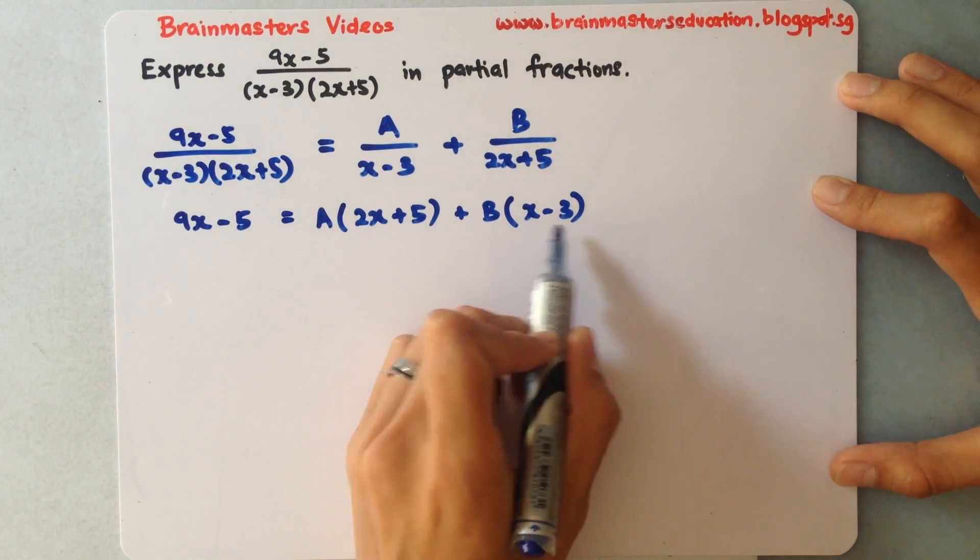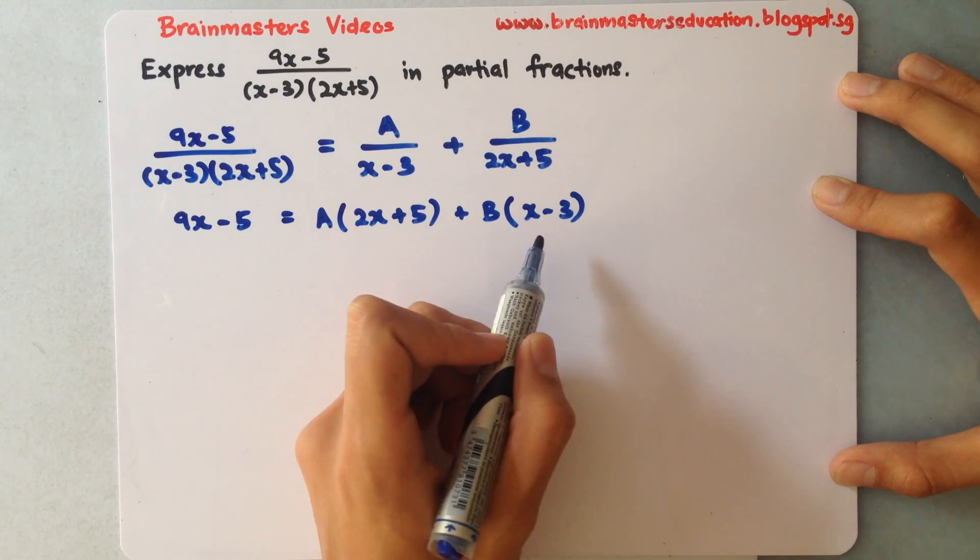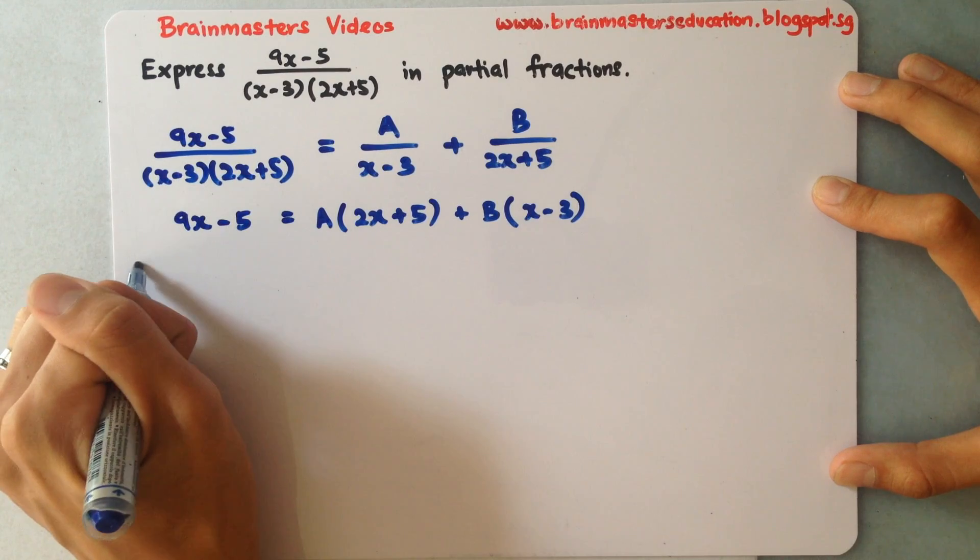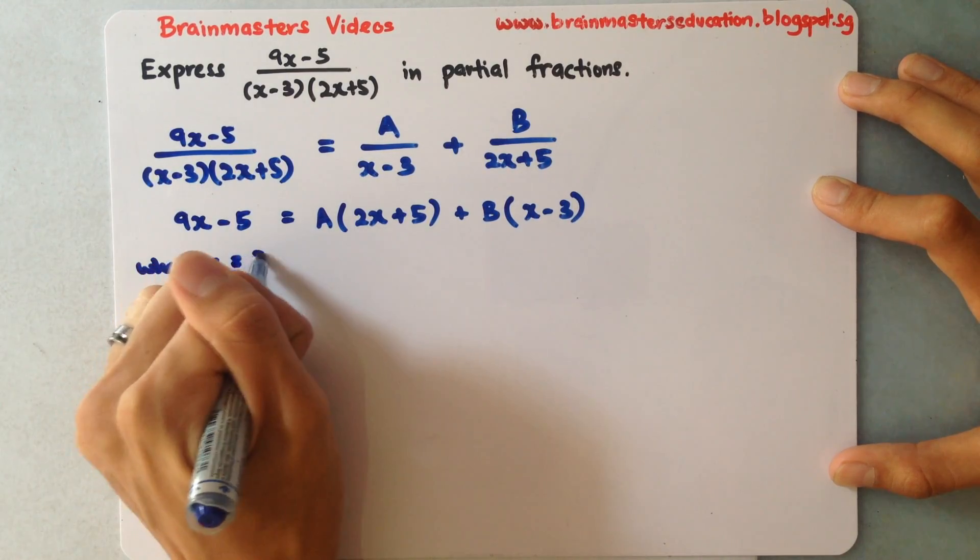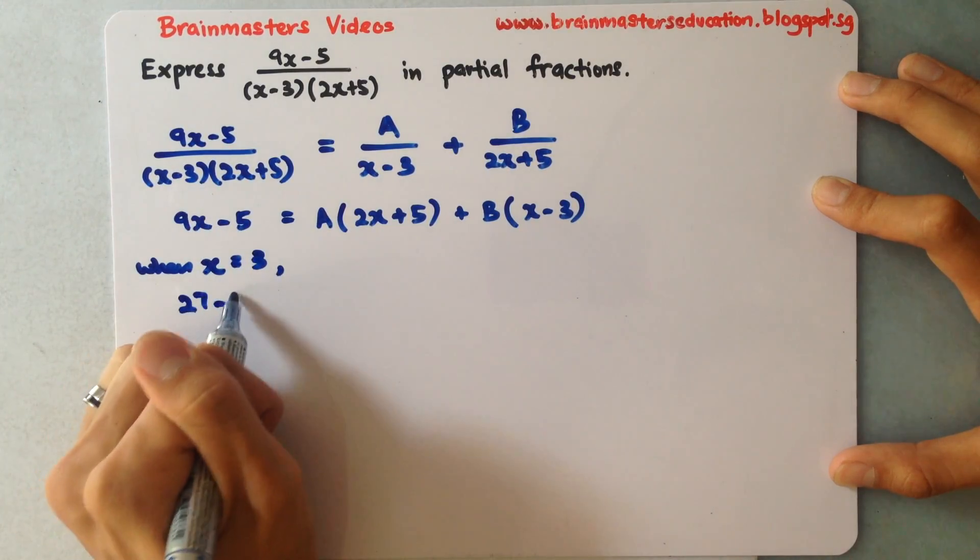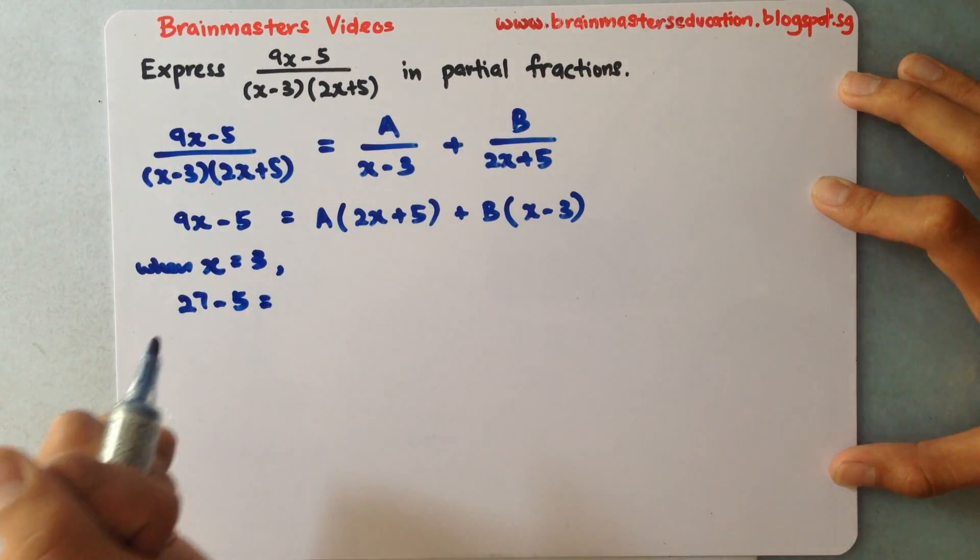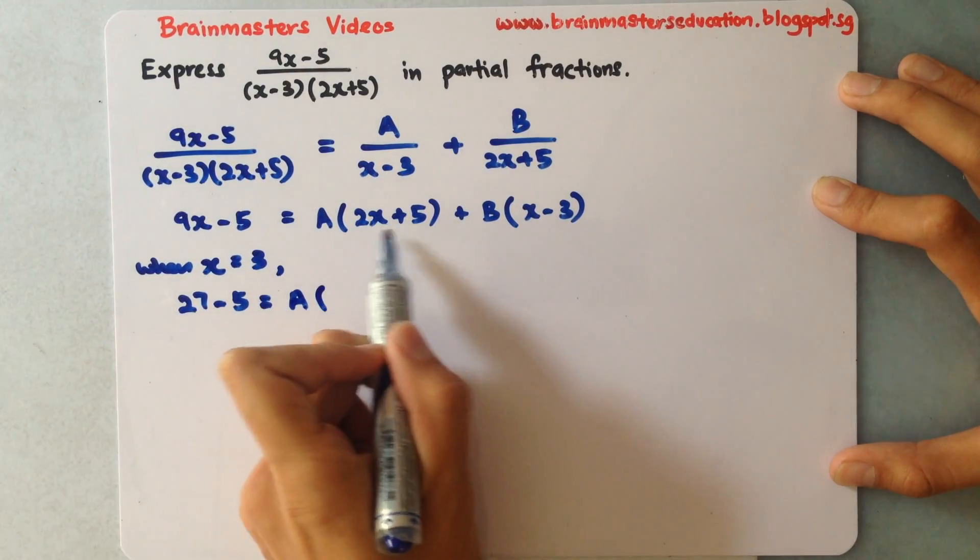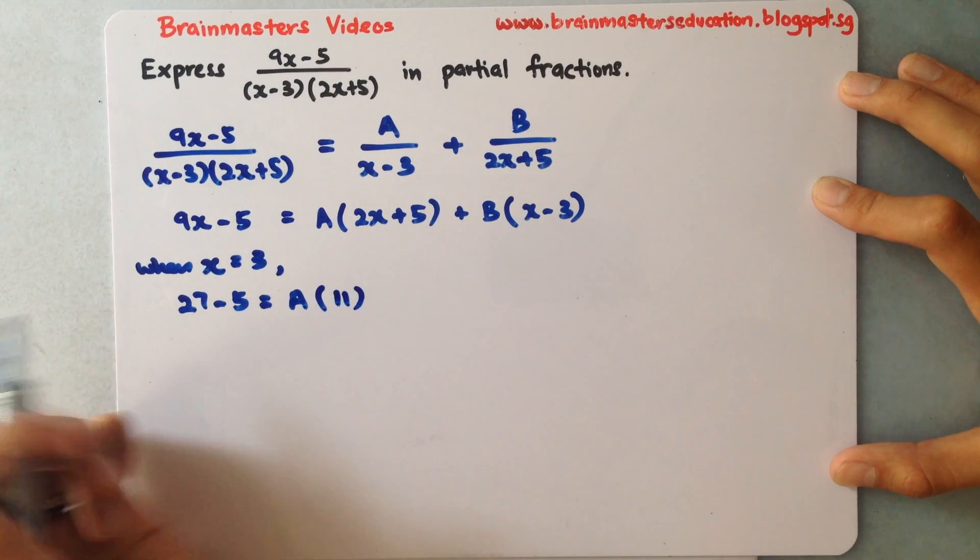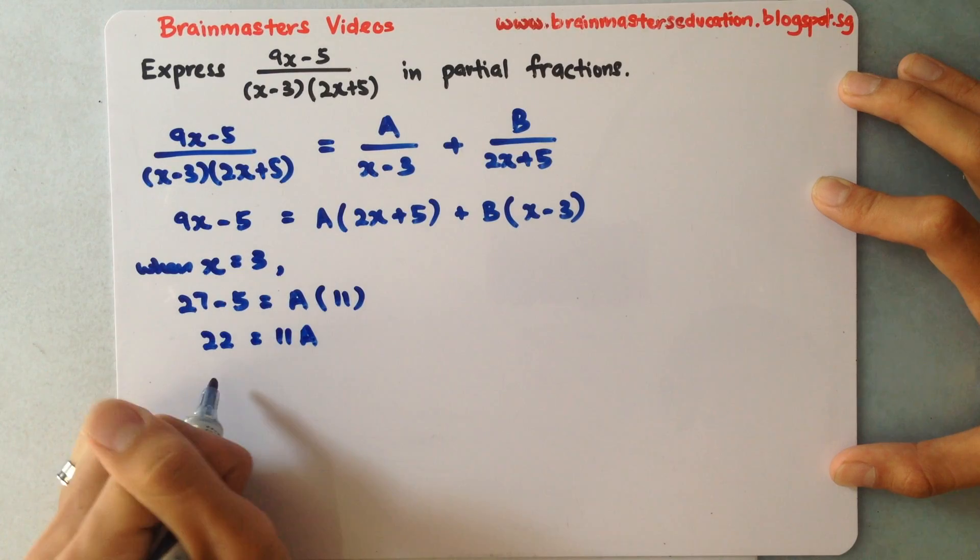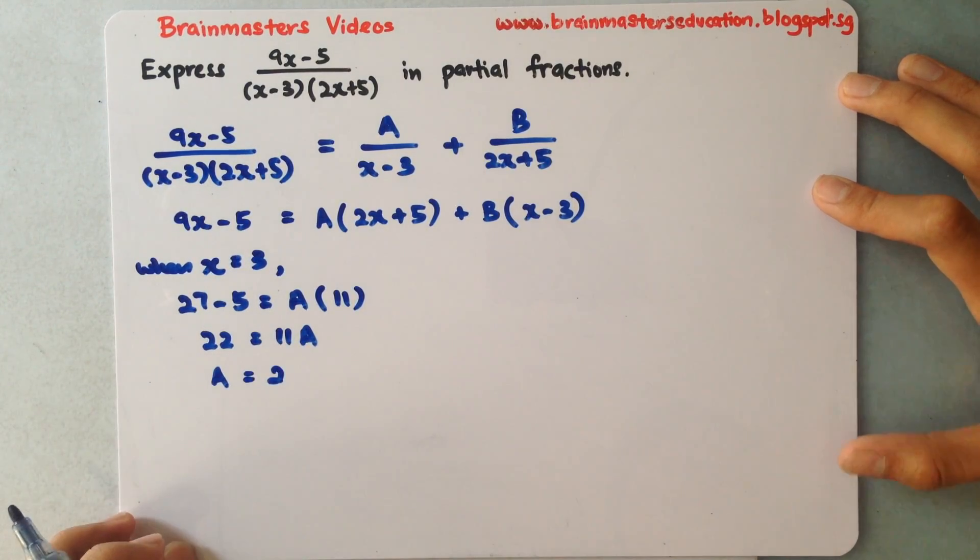This gives me the clue: I will substitute x equals 3 so as to eliminate B. When x equals 3, this will be 27 minus 5, A multiply to 6 plus 5 will be 11. So I'll have 22 equals 11A, and I'll be able to find that A equals 2.